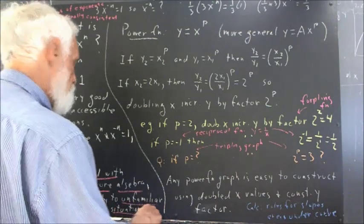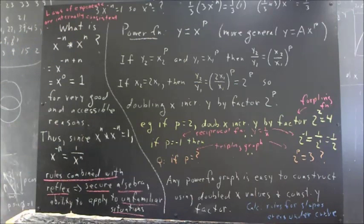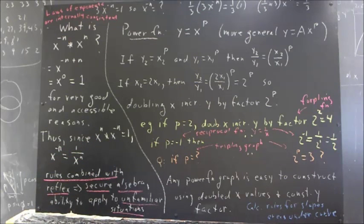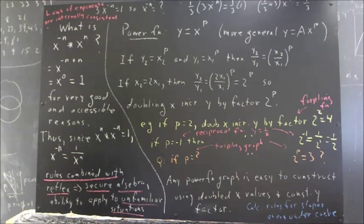Reflex isn't reliable. Rules combined with reflexes give you reliable, secure algebra and the ability to apply to unfamiliar situations. What did we see here? We saw an unfamiliar situation with x to the negative n times x to the n. An unfamiliar type of equation that's very easy to solve just using the same principles you would use to solve 2a equals 1.